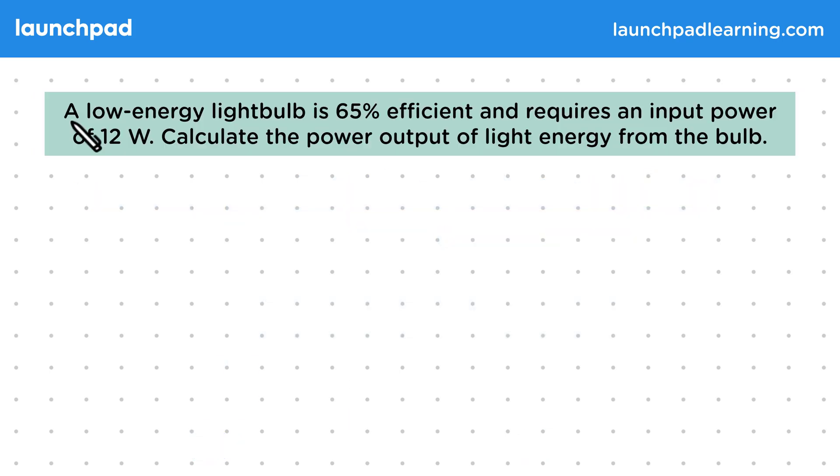Let's have a look at another example. A low energy light bulb is 65% efficient and requires an input power of 12 watts. Calculate the power output of light energy from the bulb.